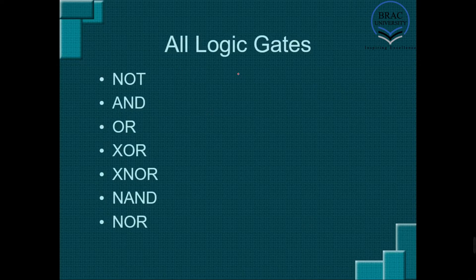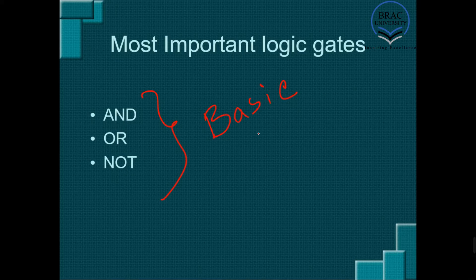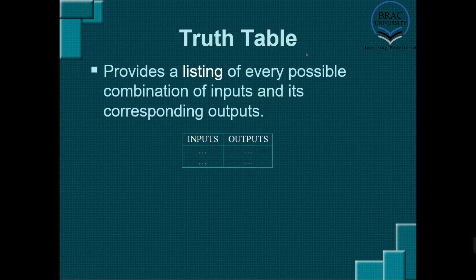There can be different types of logic gates in digital logic design. First, let's talk about the most important logic gates. Here we can see three different gates: AND, OR, and NOT. These gates are also called basic gates, because whatever we want to build will have to use any of these three gates — they are the most fundamental types of gates in digital logic design. Before going into further details, let's talk about truth tables. A truth table provides a listing of every possible combination of inputs and its corresponding outputs.